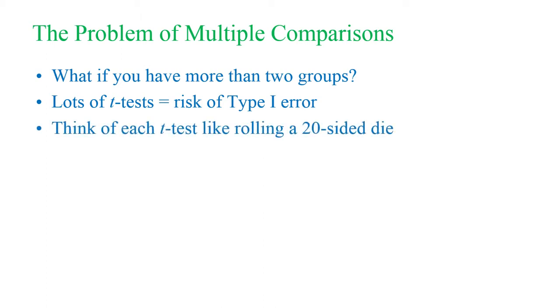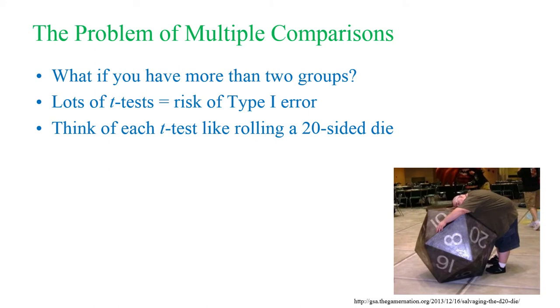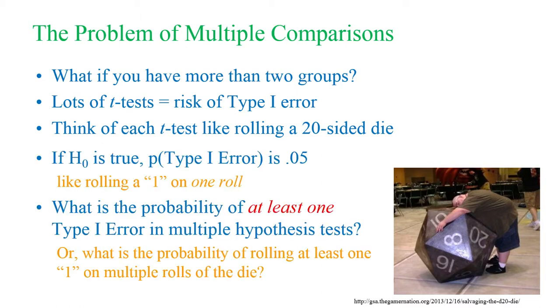You have Type 1 error on every individual trial. Think of each t-test that you perform with an alpha of 0.05 like rolling a 20-sided die. There's a 1 in 20 chance that it will come up a 1.